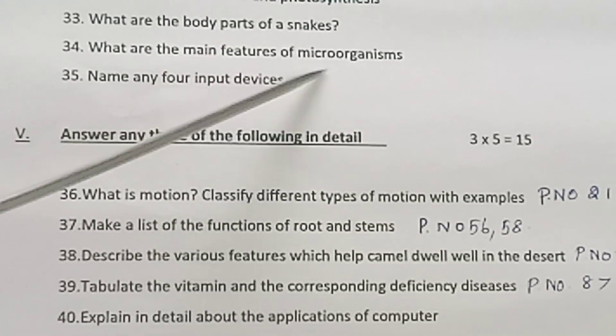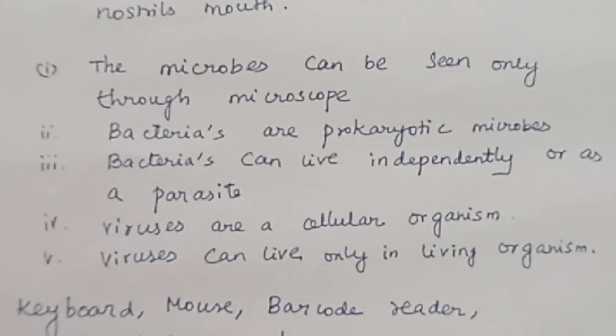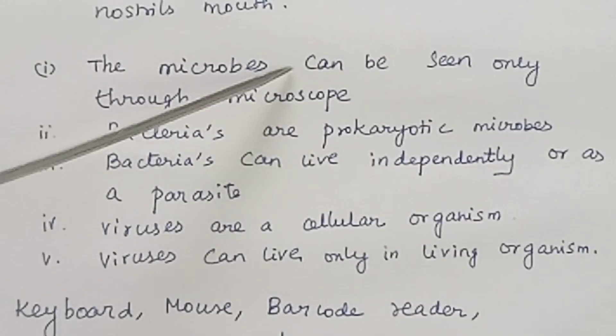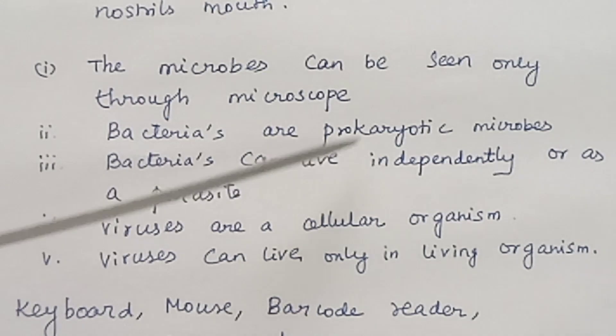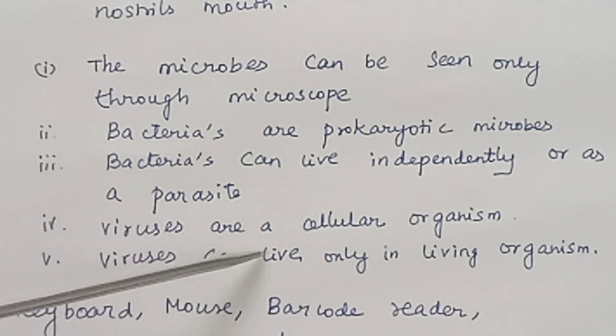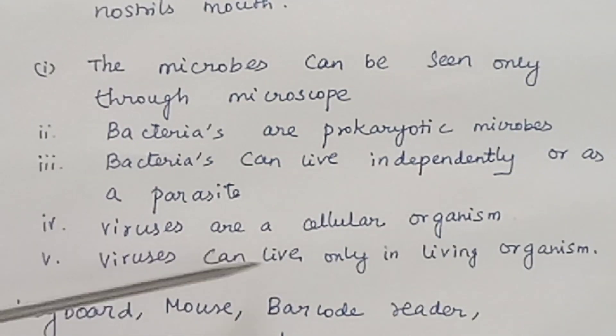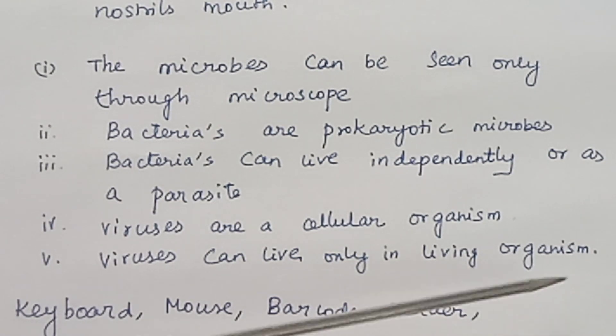Question 34. What are the main features of microorganisms? First point: the microbes can be seen only through microscope. Bacteria are prokaryotic microbes. Bacteria can live independently or as parasites. Virus are acellular organisms. Virus can live only in living organisms.